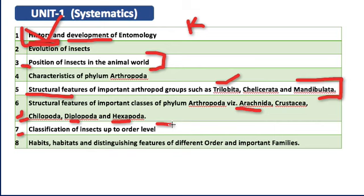For classification of insects up to order level — some people make the mistake of starting from Insecta directly. Since it says 'up to order level,' start from Kingdom: Kingdom Animalia, Phylum Arthropoda, Sub-phylum Mandibulata, Class Insecta. Class Insecta has two subclasses — Exopterygota and Endopterygota. Exopterygota has 16 orders and Endopterygota has 9 orders. Enlist those orders and remember the important examples for each.